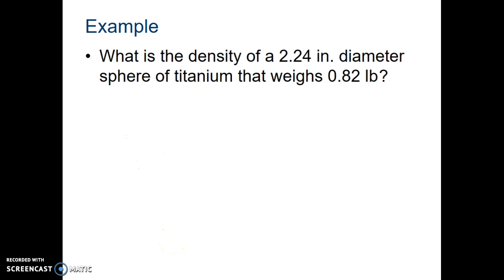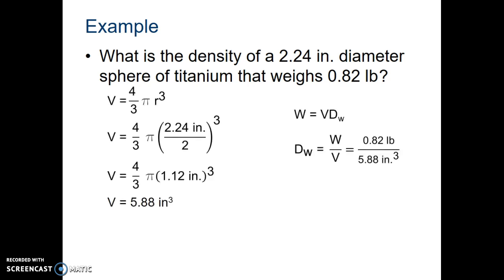Now what we can do with that figure is we can go back to our density formula. I can get this formula off the formula sheet and I can plug in the things that I know, which are the weight is 0.82 pounds and the volume is 5.88 cubic inches. Notice that that's been rearranged to get the D by itself, the density by itself. When I take 0.82 divided by 5.88, I'm going to end up with 0.14 pounds per cubic inch. So that is the weight density of the titanium sphere in this sample.